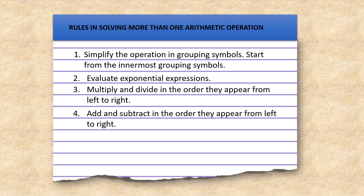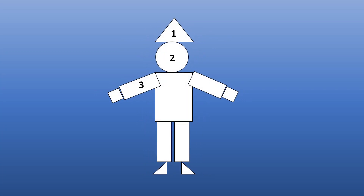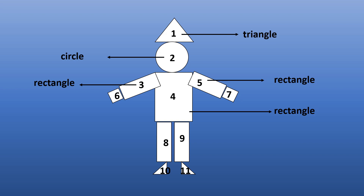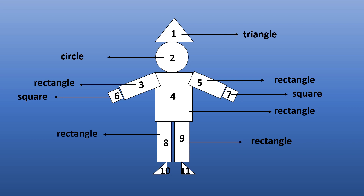Let's see if you can identify the different shapes in this robot. The first shape is a triangle. The second is a circle. Third, fourth, and fifth are rectangles. For the sixth and seventh, squares. Eight and nine are rectangles. And the last two are triangles.